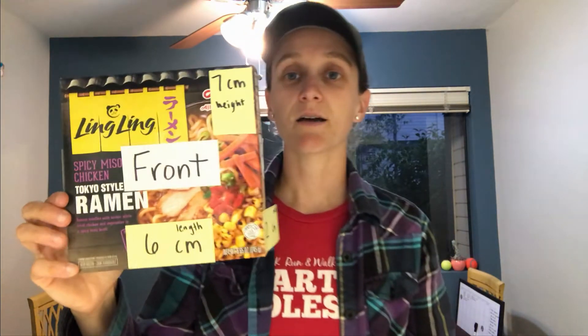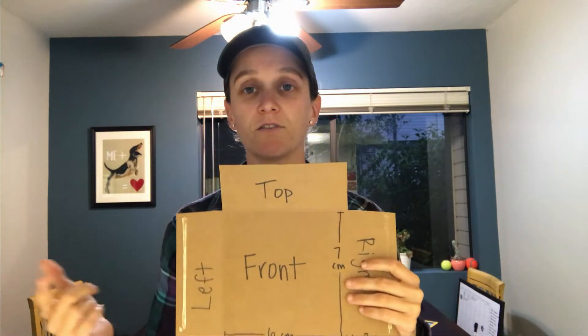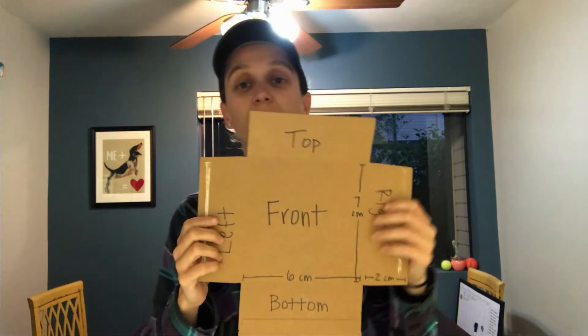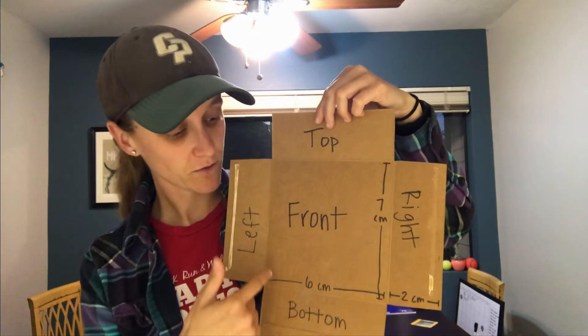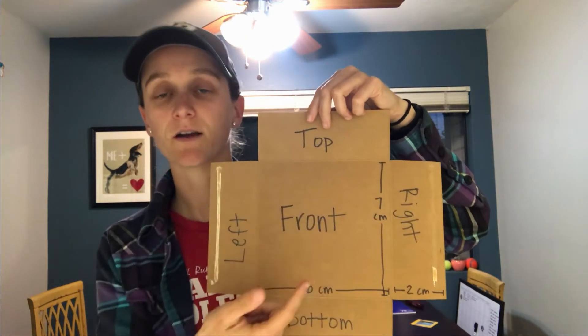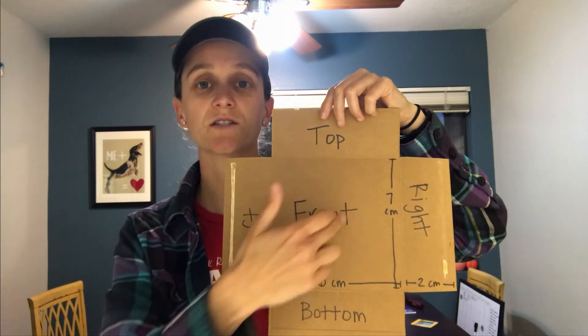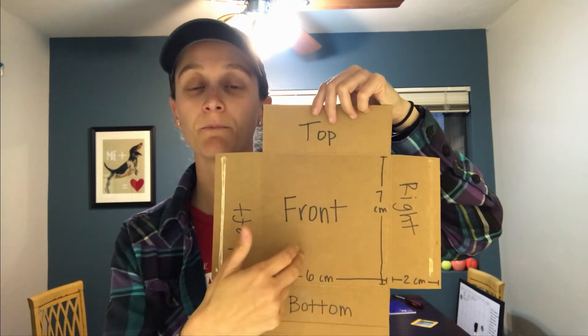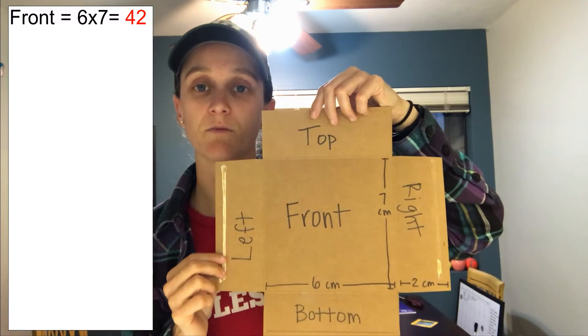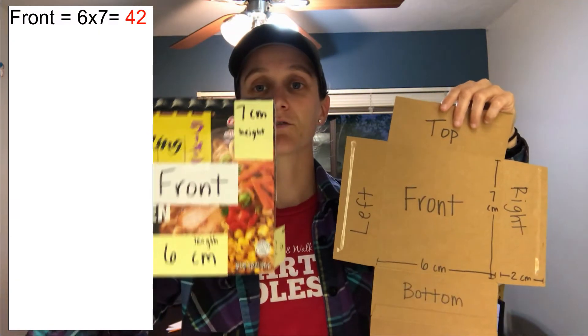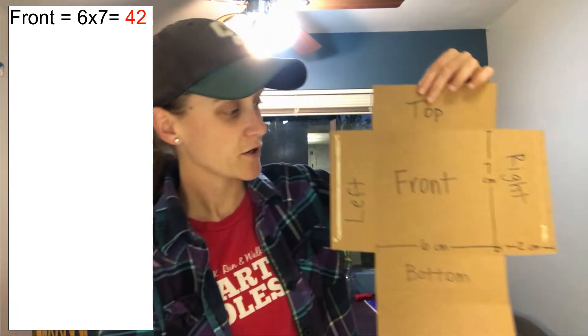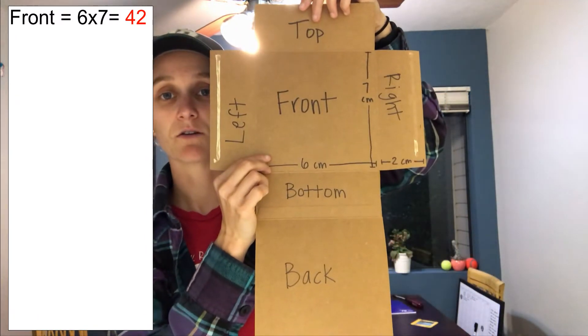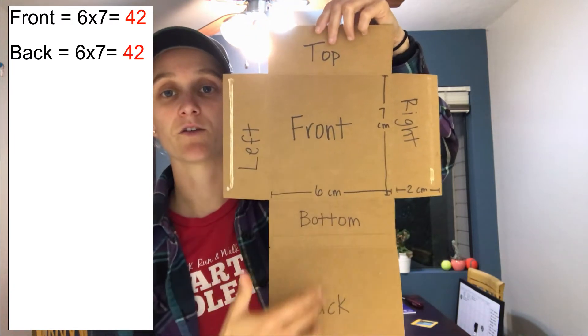I measured this box: it was six centimeters in length, seven centimeters in height, and two centimeters in width. I'll use the net. The front was six centimeters by seven centimeters. Area is length times width, so six times seven is 42. So the front side is 42 square centimeters. And notice that the front is the same size as the back, so if the front is 42, the back is also 42.